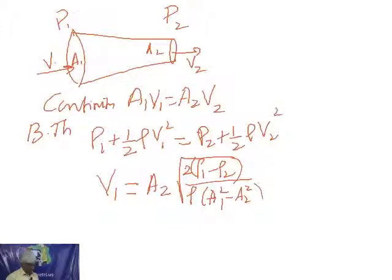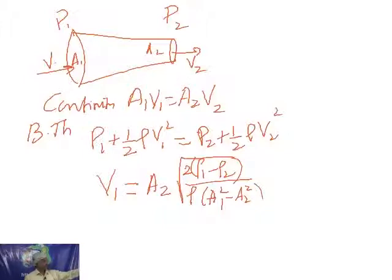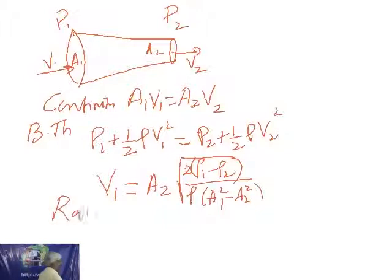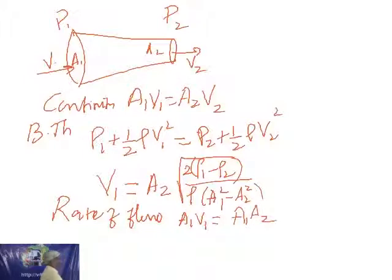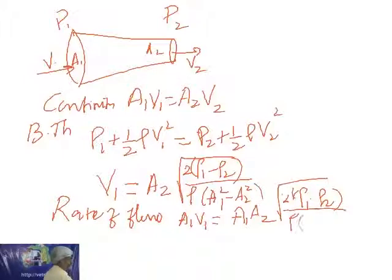The rate of flow is A1V1. Since V1 equals A2 times root of 2(P1 minus P2) divided by rho(A1 squared minus A2 squared), the rate of flow equals A1 times A2 times root of 2(P1 minus P2) divided by rho(A1 squared minus A2 squared). Substituting: A1 equals pi times 0.1 squared, A2 equals pi times 0.04 squared, pressure difference equals 10, rho equals 1.25 into 10 cubed. On simplification, the answer is 6.4 into 10 power minus 4 meter cubed per second — that is the rate of flow.